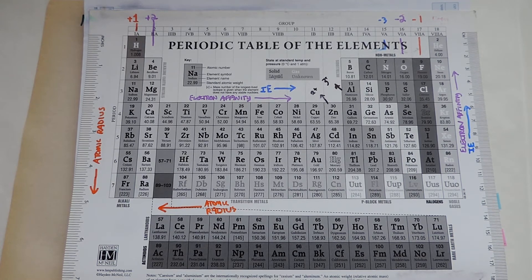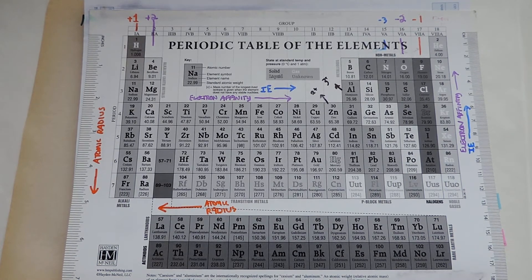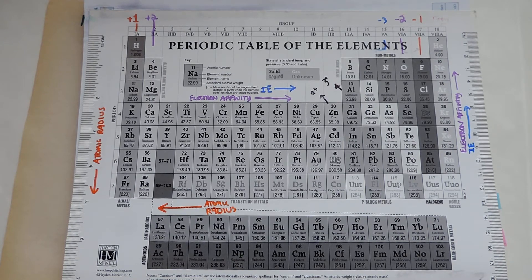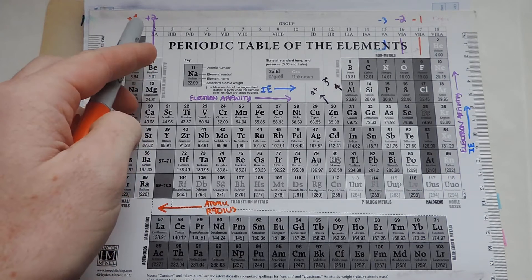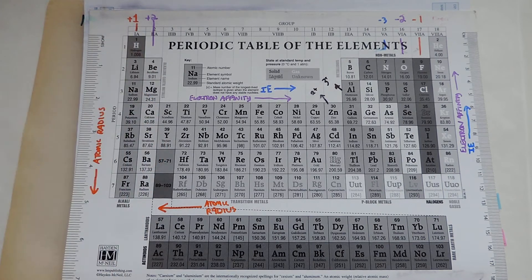For naming ionic compounds, it's very important to be familiar with the periodic table. With the alkali and alkaline metals, we're going to have a plus one and a plus two charge.